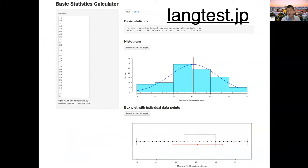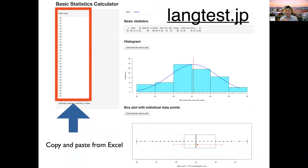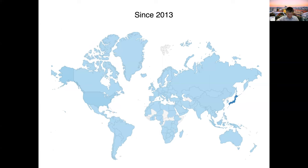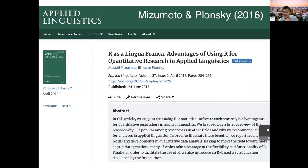The final web app I'll introduce is called LangTests. It's very easy and intuitive to use — you simply copy and paste data from a spreadsheet and immediately see results. You can conduct a wide range of statistical analyses for free, and LangTests utilizes the power and flexibility of R. Since its release in 2013, the LangTests web application has been used worldwide.